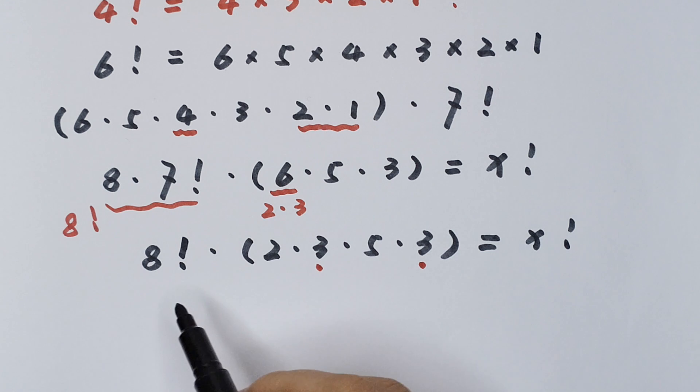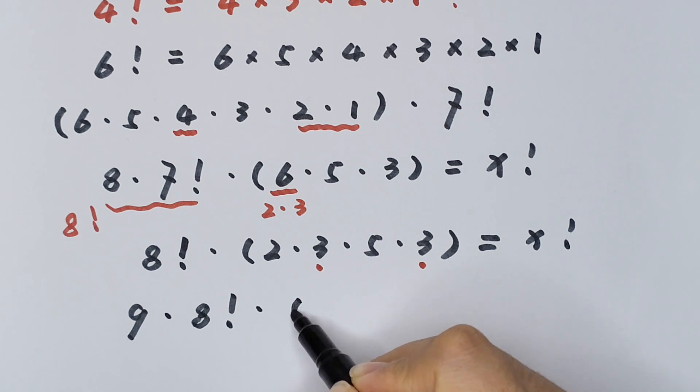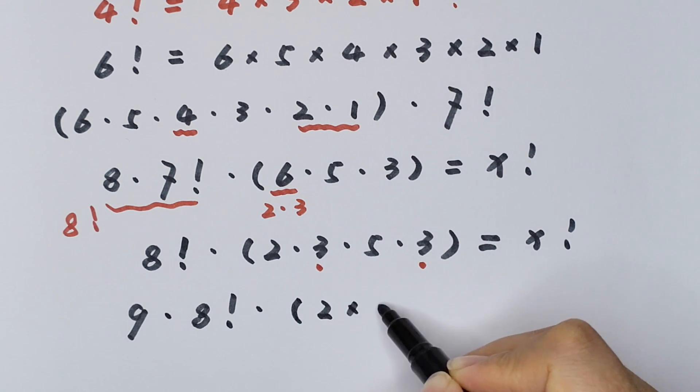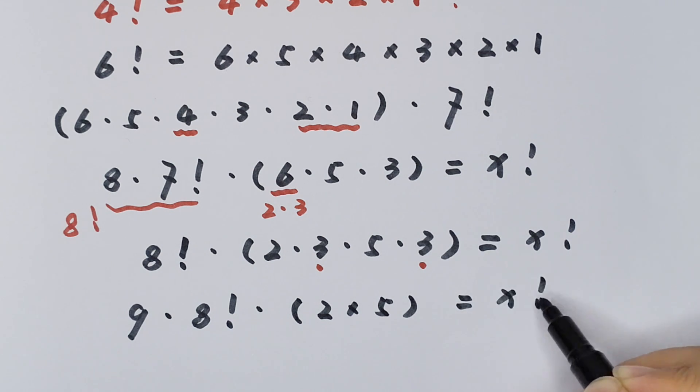So we take 9 out of the bracket, then 9 times 8 factorial times 2 times 5 equals x factorial.